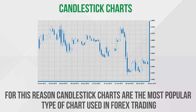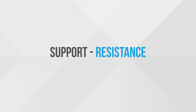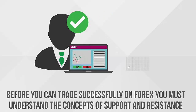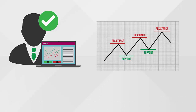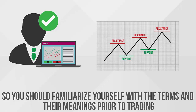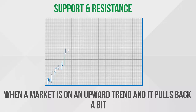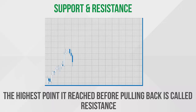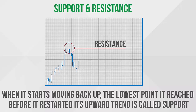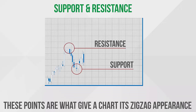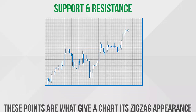Support and resistance: before you can trade successfully on Forex, you must understand the concepts of support and resistance. These are referred to often when analyzing trends, so you should familiarize yourself with the terms prior to trading. When a market is on an upward trend and it pulls back a bit, the highest point it reached before pulling back is called resistance. When it starts moving back up, the lowest point it reached before restarting its upward trend is called support.